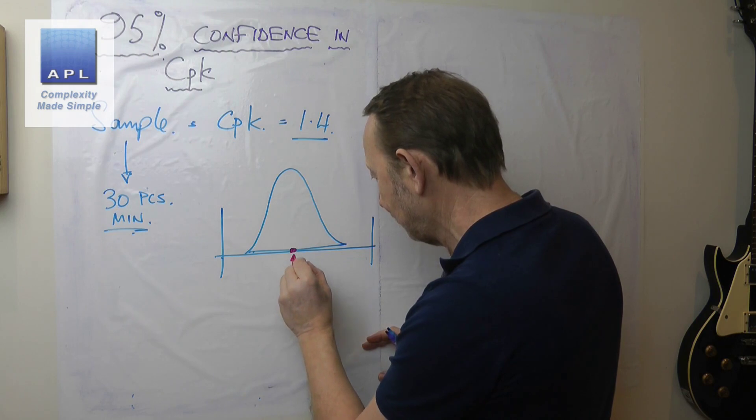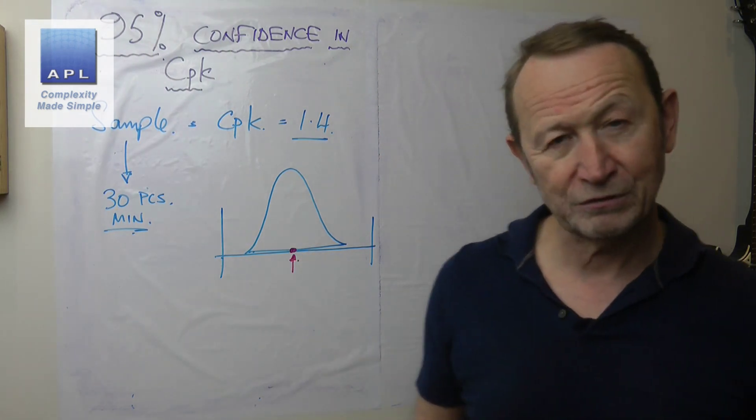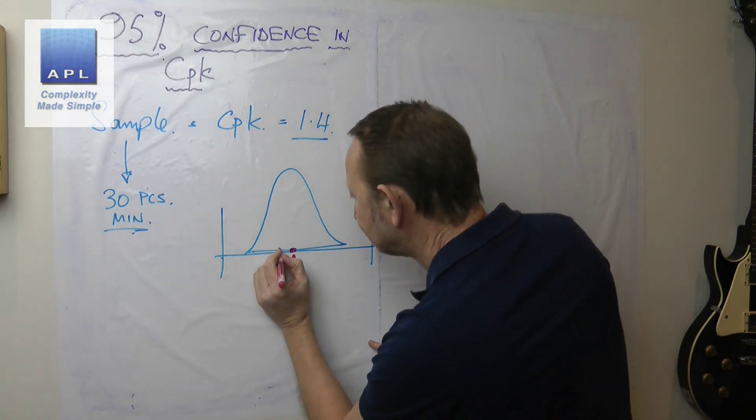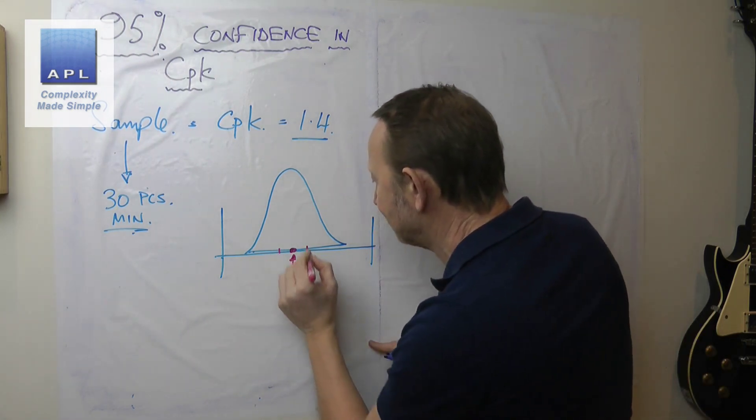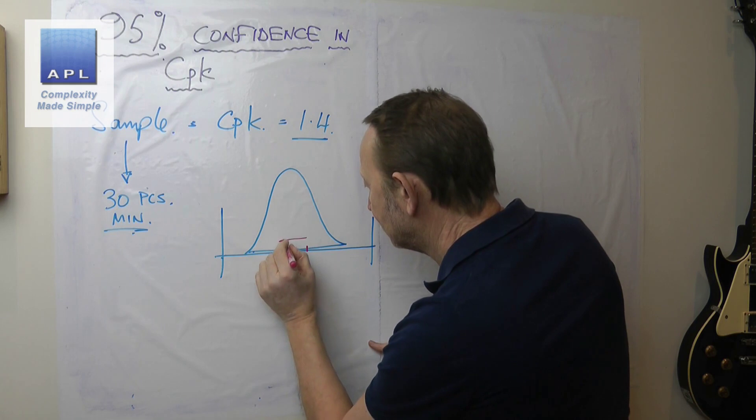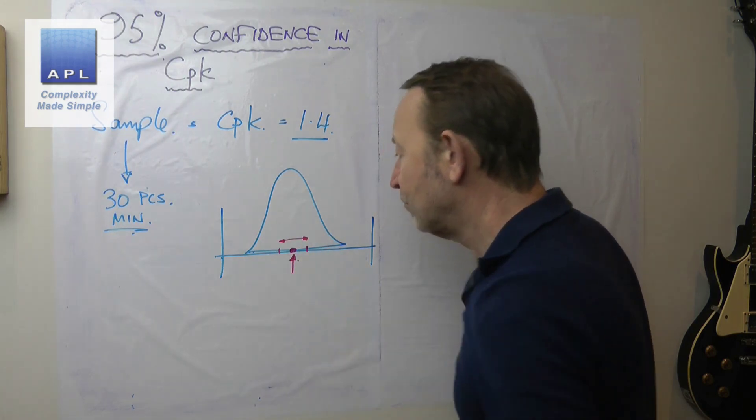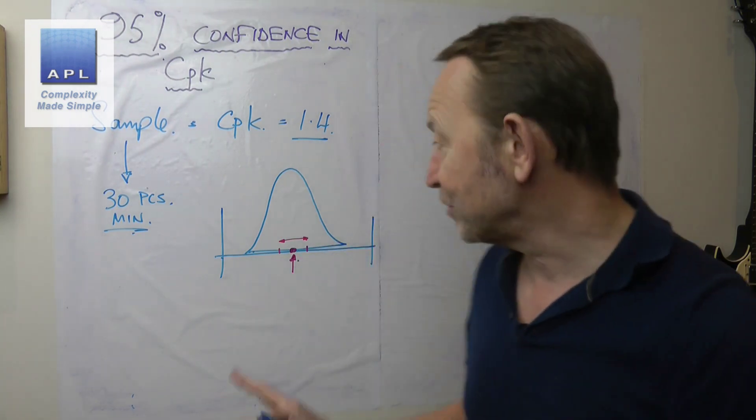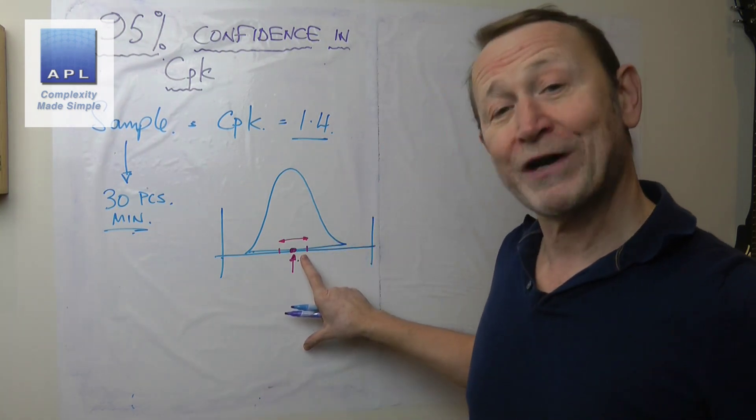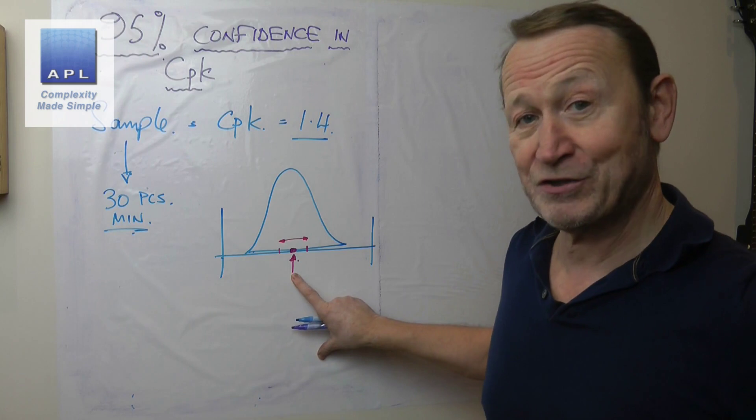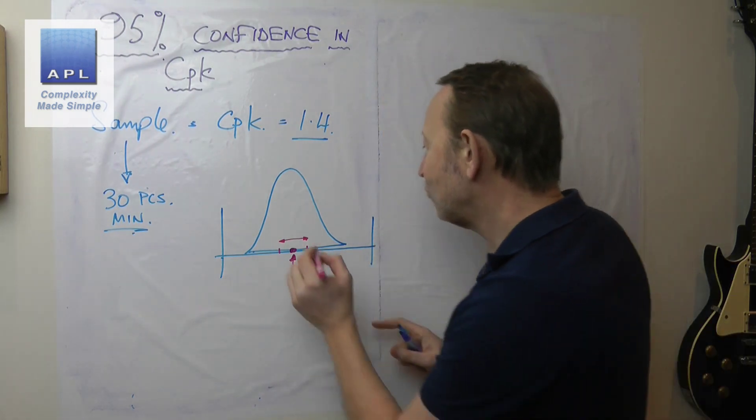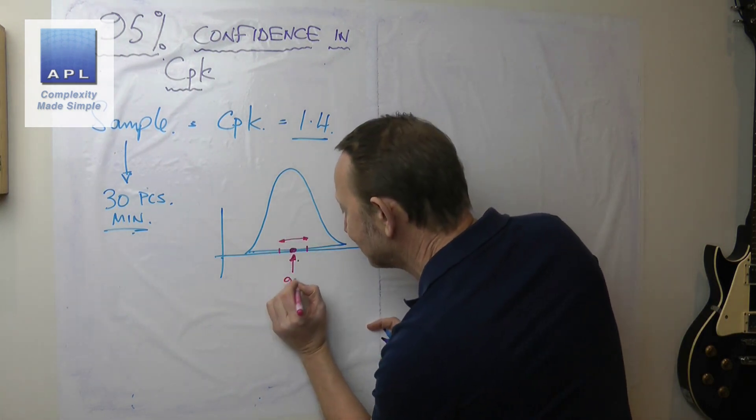We work out a confidence interval. What a confidence interval says is, 'That's where your mean fell in your sample, but if you keep sampling, you'll probably see the mean move in this window here.' We can be 95% confident that the real average—because this is just an estimate—is somewhere in that window.